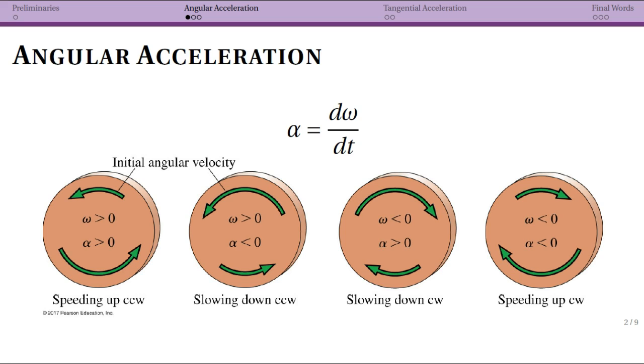First is the idea of angular acceleration, which is alpha. Ideally you have some way of writing alpha so it looks different than a. The distinction between a, lowercase a, and alpha is very important.